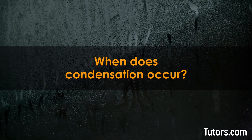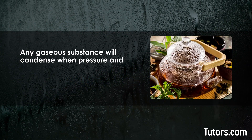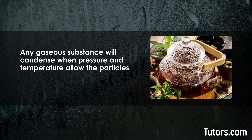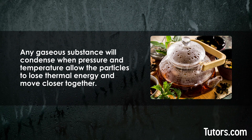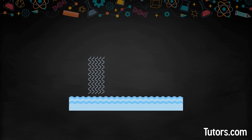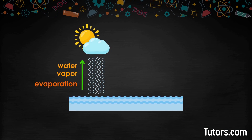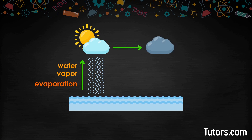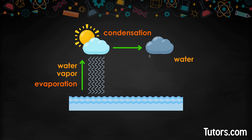When does condensation occur? Any gaseous substance will condense when pressure and temperature allow the particles to lose thermal energy and move closer together. Water vapor in the air does this when it encounters a colder surface. The thermal energy moves from the water molecules in the air into the colder surface, causing the water molecules to slow down and move closer together, resulting in a change from gas to liquid.